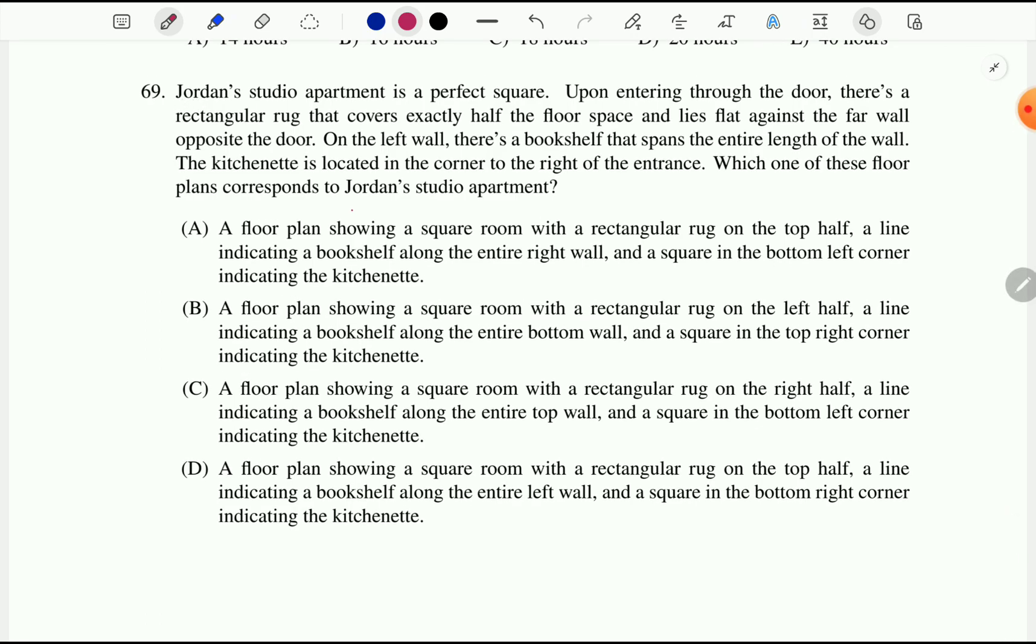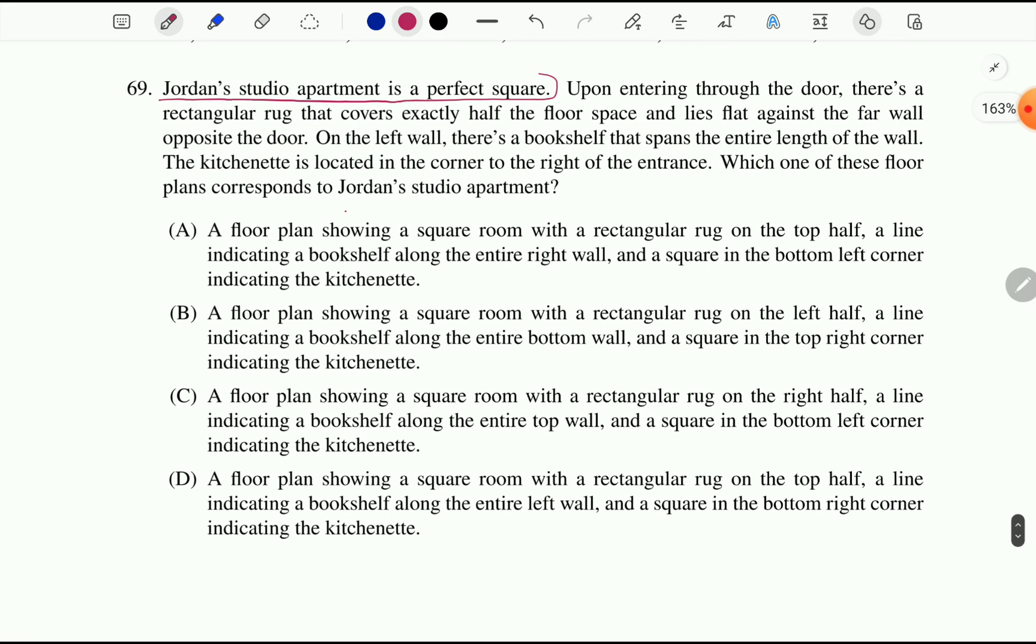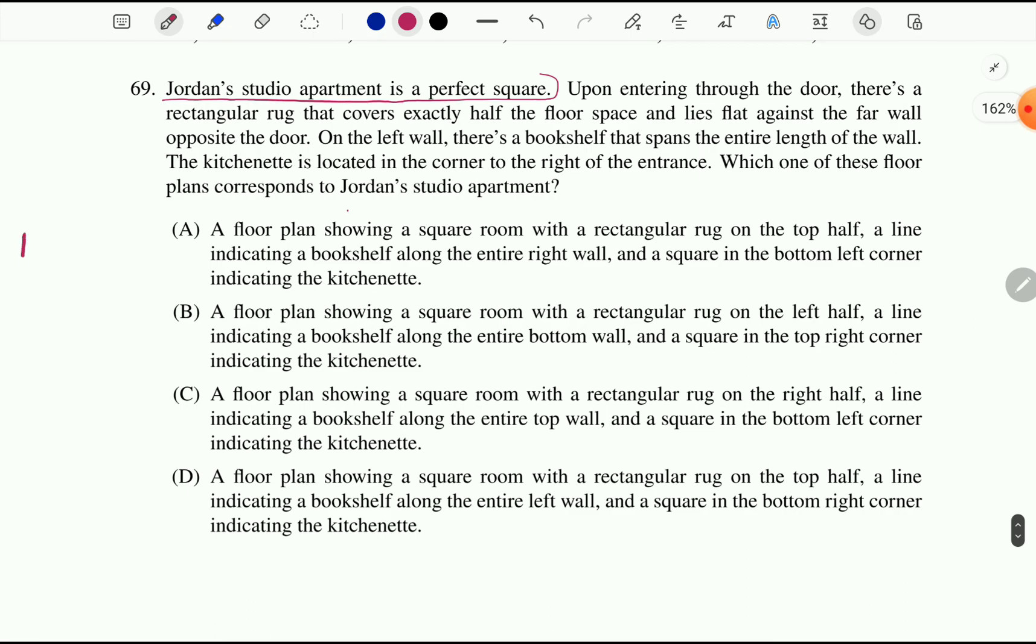In the first sentence it is written that Jordan's studio apartment is a perfect square. So by this sentence we can understand Jordan has an apartment which is perfectly square. So for better understanding, for visualization, let's draw the room. So this is the perfectly squared room.